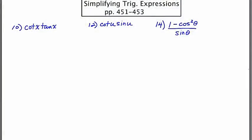In this video, I'm going to be working through some even problems from our textbook so you can see the solutions. Number 10, the problem is cotangent x times tangent x. The first thing that I notice is that these two expressions are reciprocals of one another, and the product of two things that are reciprocals is going to be one.